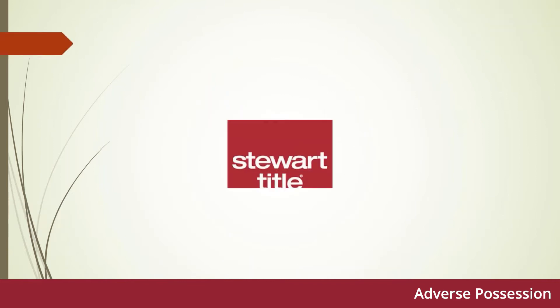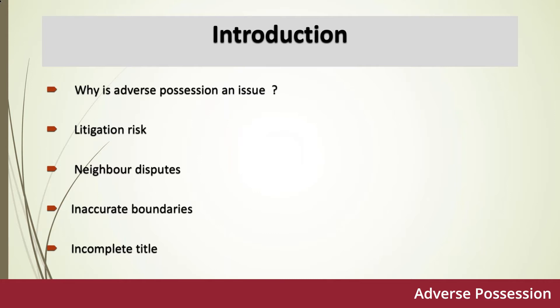We need to think about just what adverse possession is and how it is an issue in conveyancing. Our mantra, whatever level of experience we have, should be that we are buying property on behalf of our clients and not buying litigation. With regard to adverse possession, the litigation risk includes proceedings for trespass, seeking an injunction against a neighbour who has encroached onto our title, litigation relating to an adverse possession claim referred to the First-tier Tribunal, and litigation relating to seeking rectification of a paper title where a successful adverse possession claim has been made in the past.